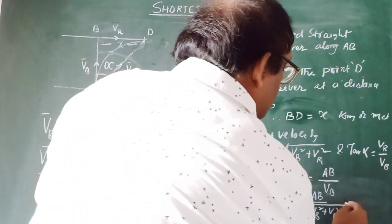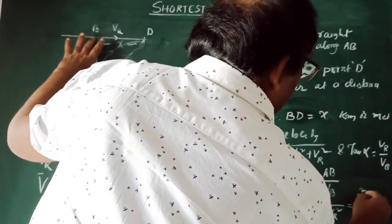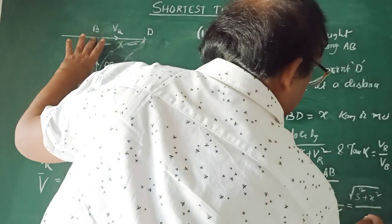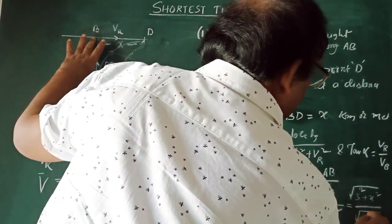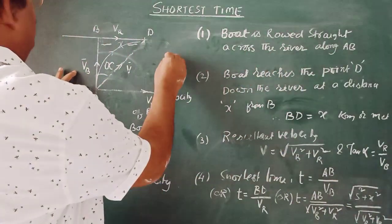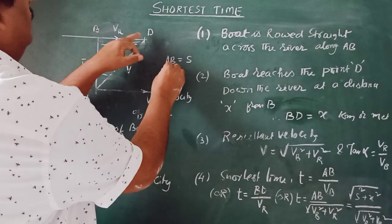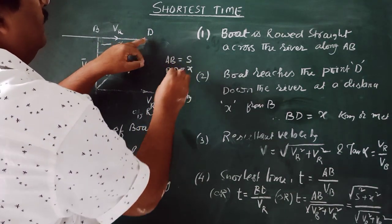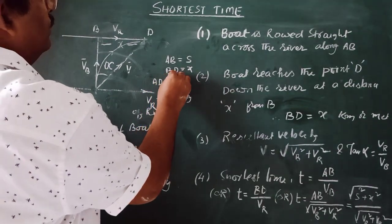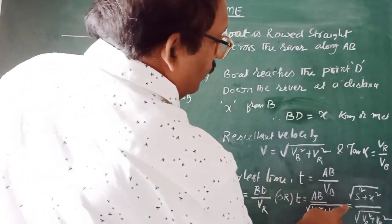If the width of the river is S, then AB equals S and the drift VD equals X. The resultant distance AD is given by the square root of S squared plus X squared, and the resultant velocity is the square root of VB squared plus VR squared.